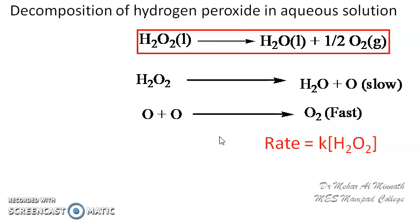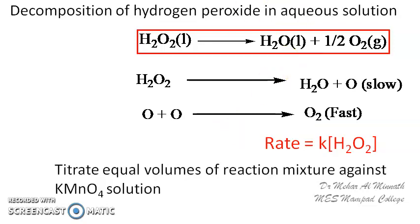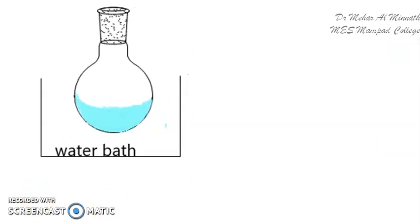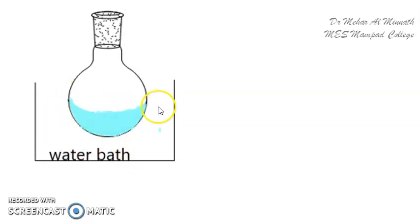Let us see how we track and study the kinetics of this reaction. We can prove that this is a first-order reaction by studying the kinetics experimentally. For this, we titrate the reaction mixture — we carry out the reaction and take out the reaction mixture at regular intervals of time. Equal amounts of reaction mixture are taken and titrated against KMnO₄ solution. The reaction pot is placed in a water bath to maintain constant temperature, so that temperature variation does not affect the kinetics.